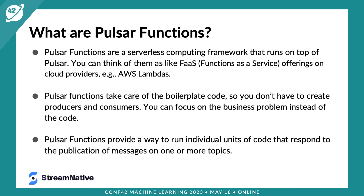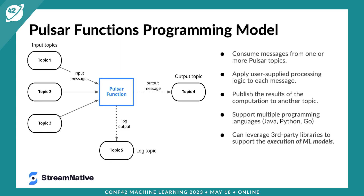Pulsar functions have a programming model like this: a function is a deployable piece of code, and every time a new message comes in, that event gets triggered automatically. Every time a message comes in off any of the input topics you're subscribed to, your code gets triggered. As you process that data, you may optionally publish it to an output topic, do some processing or manipulation. There's also an optional logging topic for monitoring, tracking progress, and debugging.